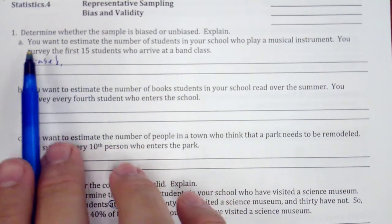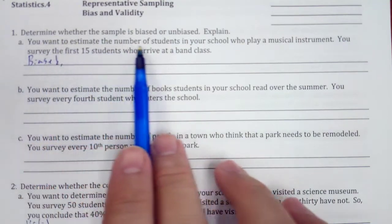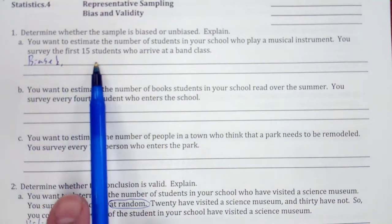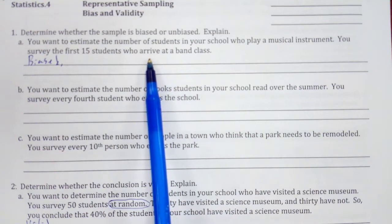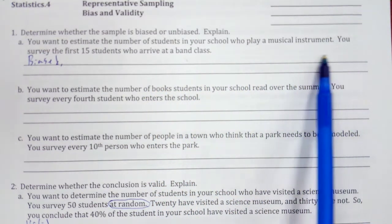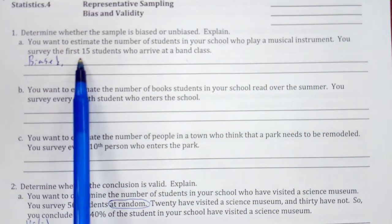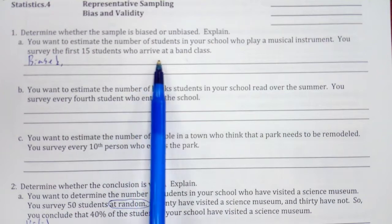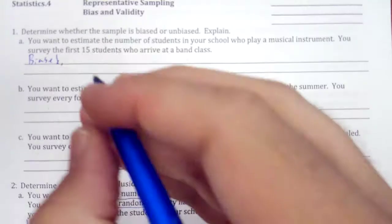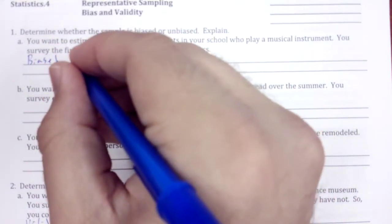Number one: determine whether the sample is biased or unbiased and explain. You want to estimate the number of students in your school who play a musical instrument. You survey the first 15 students who arrive at band class.